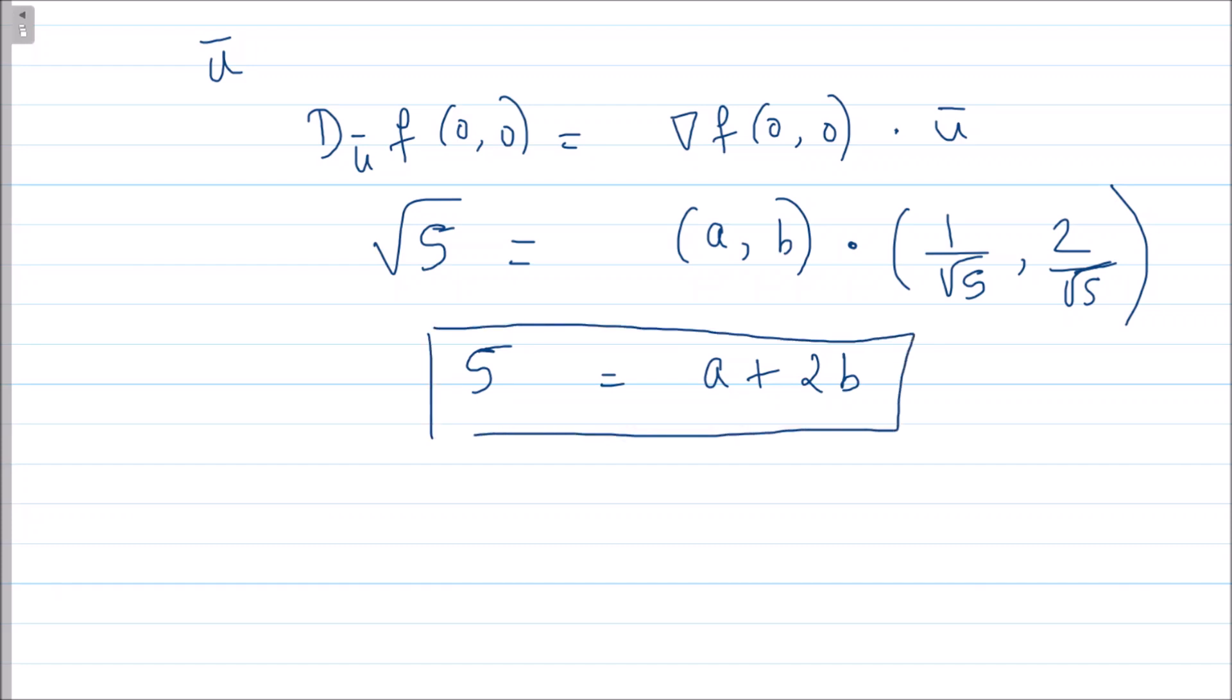Also, directional derivative of the function at (0,0) in the direction of v is given by the dot product of ∇f at (0,0) with v̄. This is given to us to be √2, and what is ∇f? It is (a, b) by our notation. And what is v̄? It is (1/√2, -1/√2).